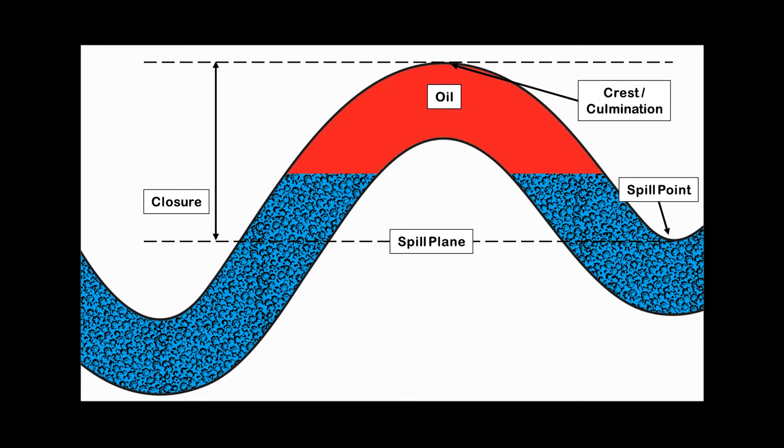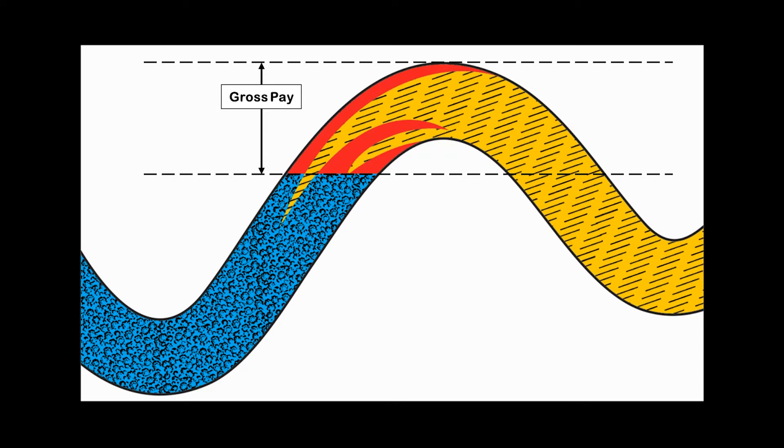In a reservoir with oil or gas, we are interested in the pay. In this case, from the crest to the oil water contact. This is the gross pay, as compared to a situation where there is a facies change within the reservoir. We will end up with a net pay, which represents only the producible oil due to the facies change.